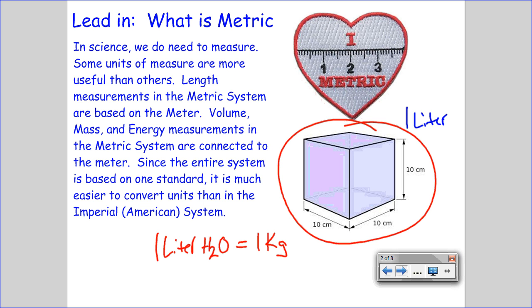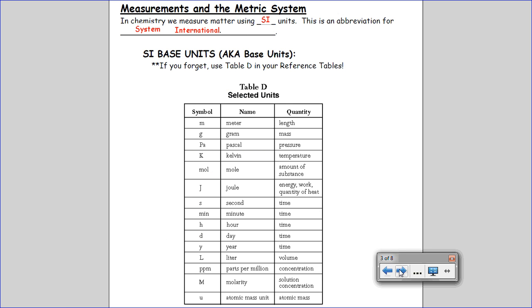In the American system, they're not connected. They're kind of arbitrary. A pound is a pound, but it's not connected to the foot, and it certainly is not connected to the fluid ounce or the gallon.